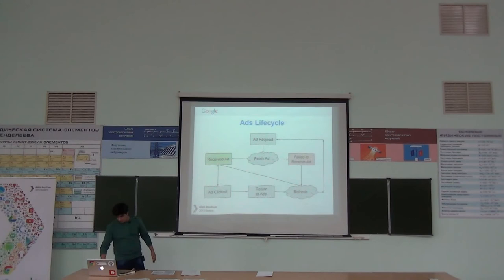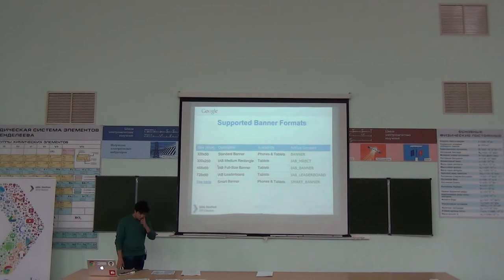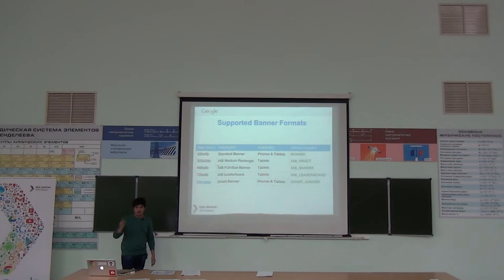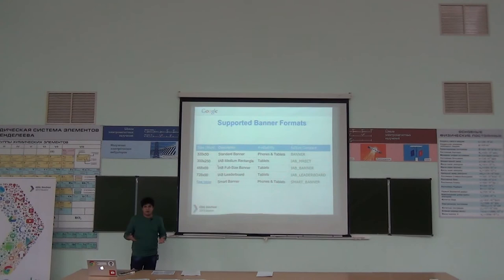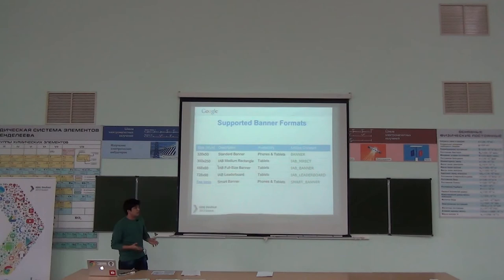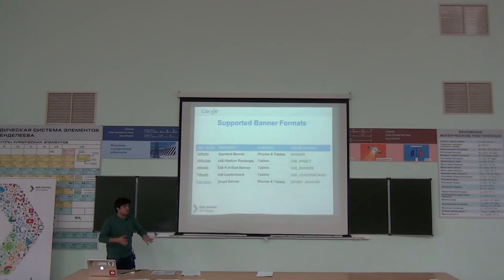What banner formats can you include? The standard banner is used by most apps — a 320x50 DPI banner at the bottom. You can utilize both phones and tablets with the constant 'banner' format. If you have a specialized app for tablets, the full-size banner works for 7-inch tablets, and the leaderboard will work for 10-inch tablets. If you try to use leaderboard for a 7-inch tablet, it won't work because it doesn't have enough space.